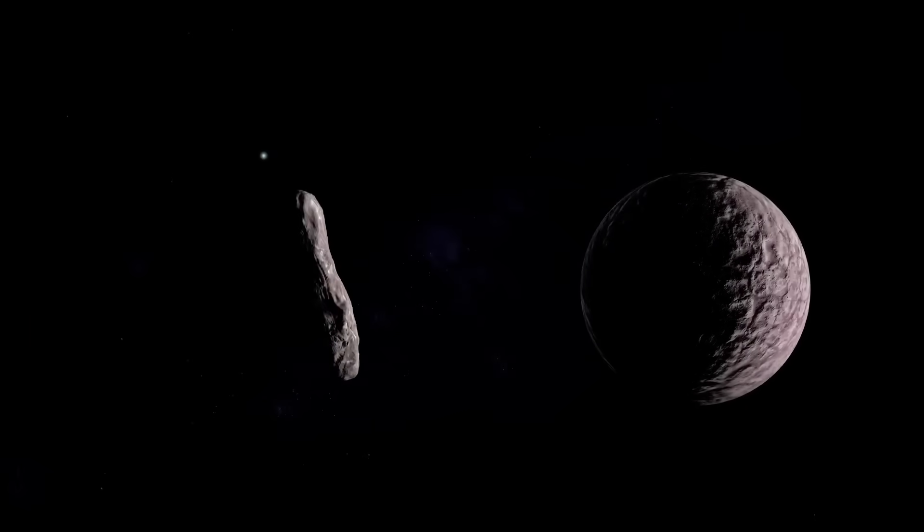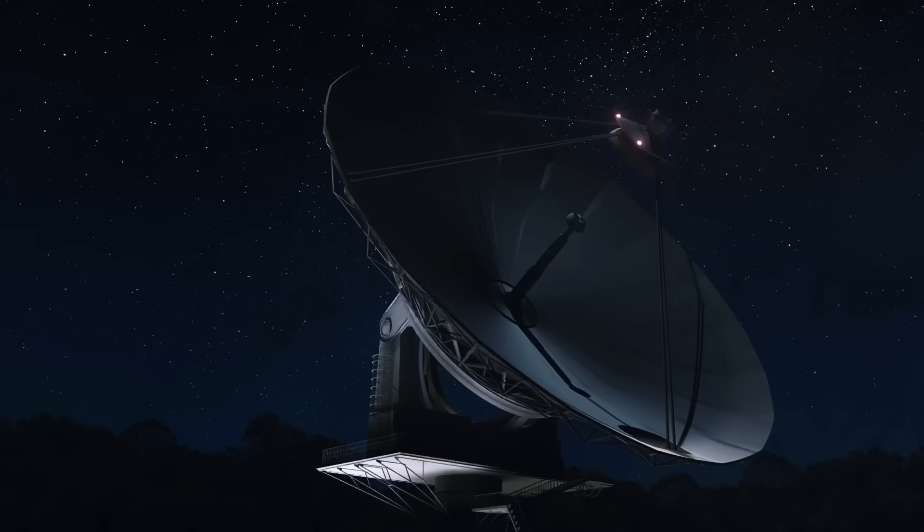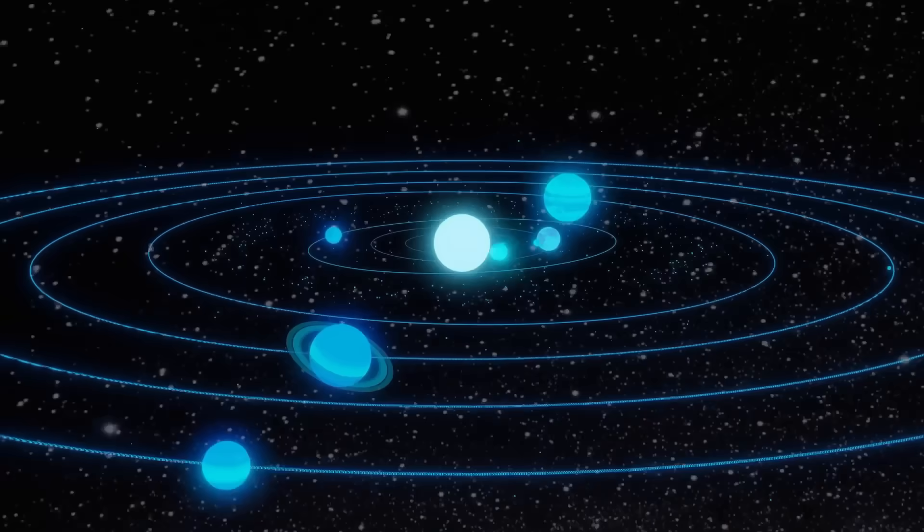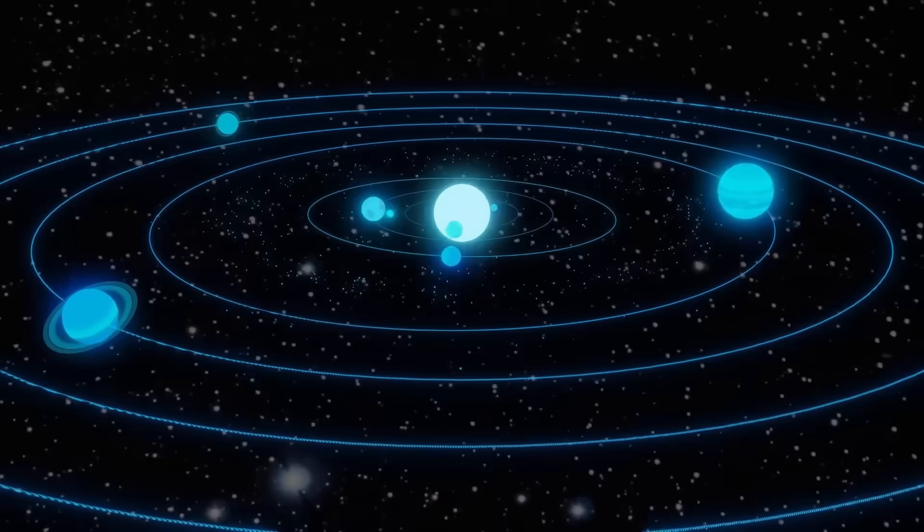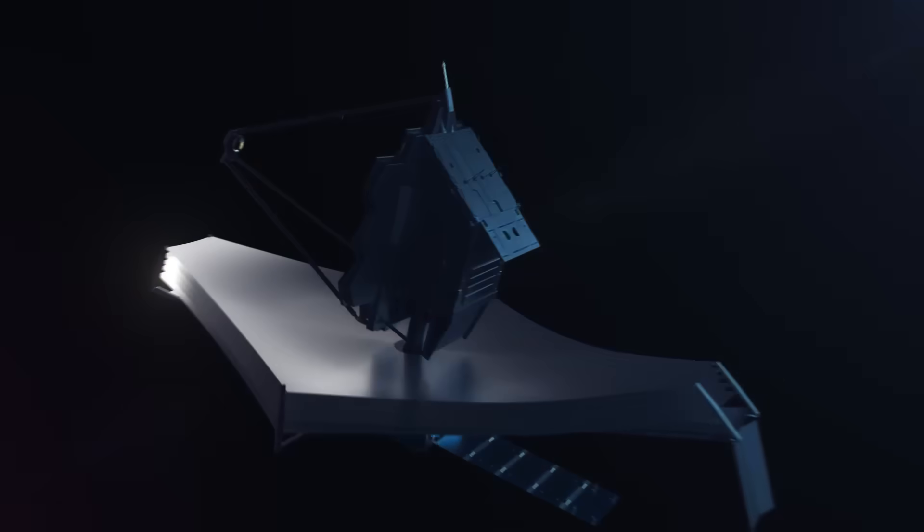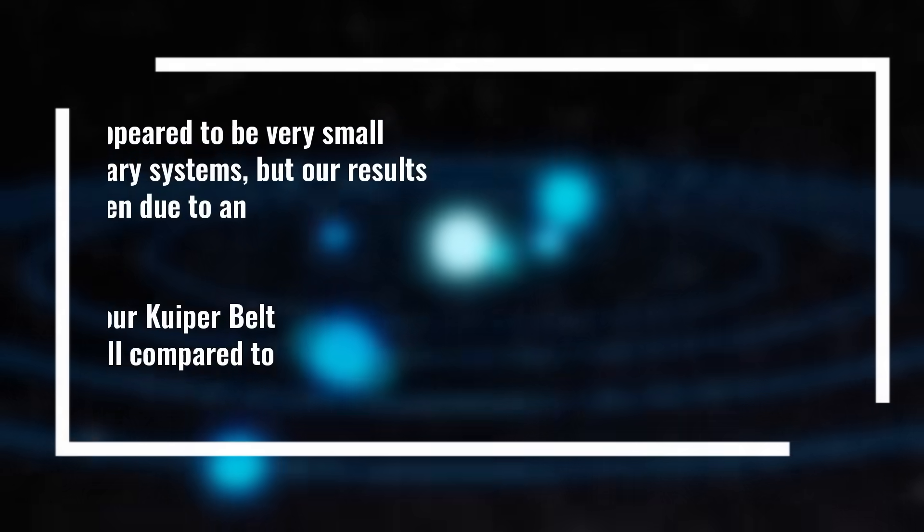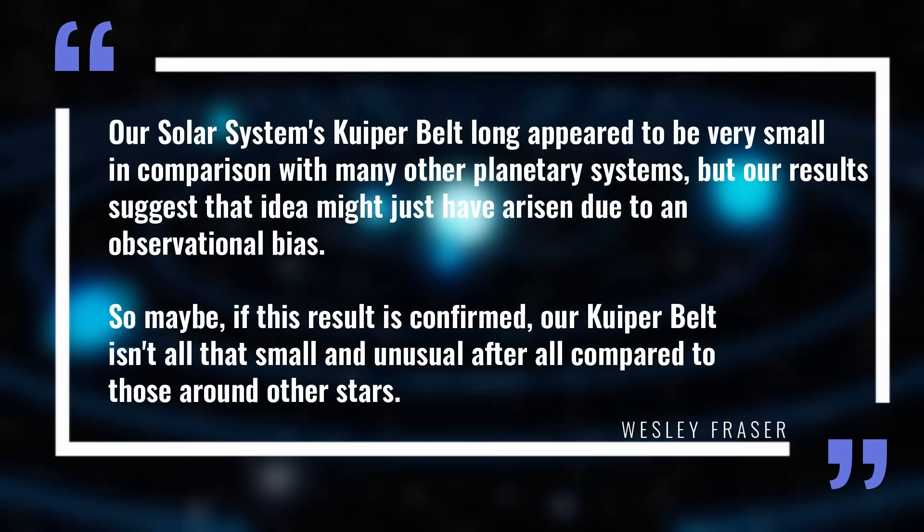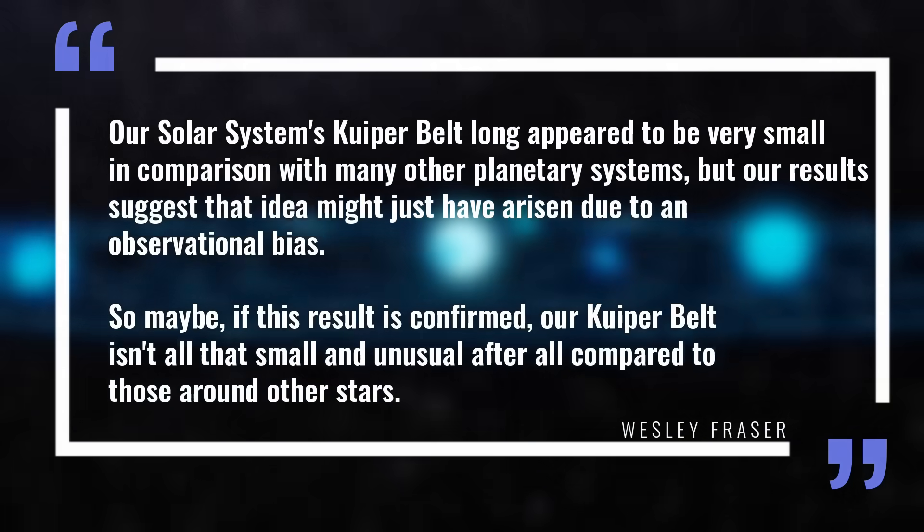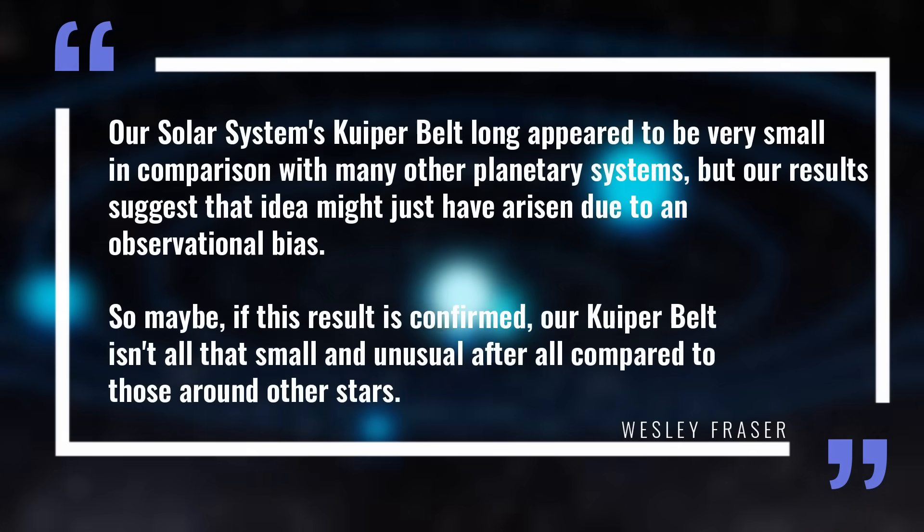But is it really mysterious, though? While it might seem a bit strange, such gaps are common in other forming planetary systems, aligning our solar system with what we've observed elsewhere in the galaxy. Many observations of the Milky Way suggest that our solar system is quite unique. Since it's the only known planetary system with life, these unusual features might play a key role in making the solar system habitable. But if the discovery of this structure is confirmed with more observations, it will tell us that our star system isn't that unique after all. Our solar system's Kuiper belt long appeared to be very small in comparison with many other planetary systems, but our results suggest that idea might just have arisen due to an observational bias, Fraser explained. So maybe, if this result is confirmed, our Kuiper belt isn't all that small and unusual after all, compared to those around other stars.